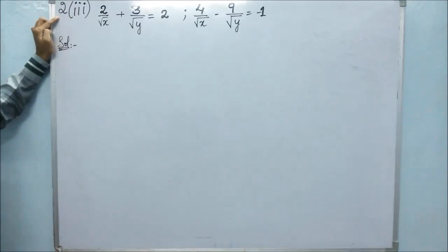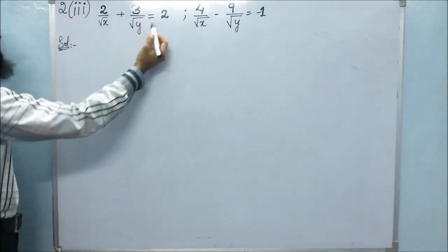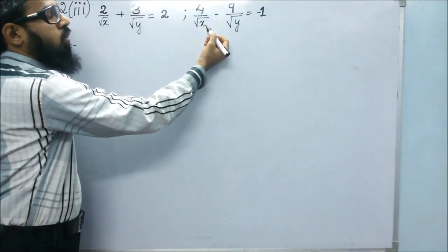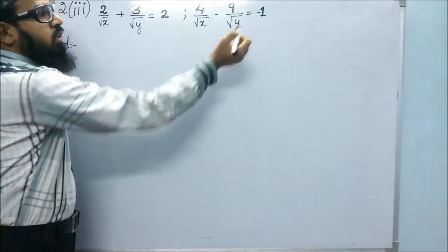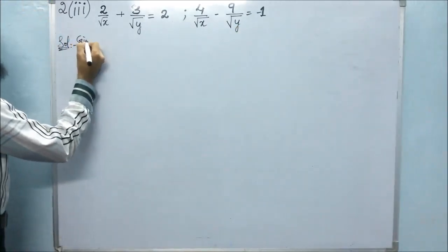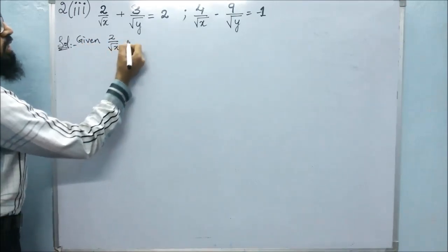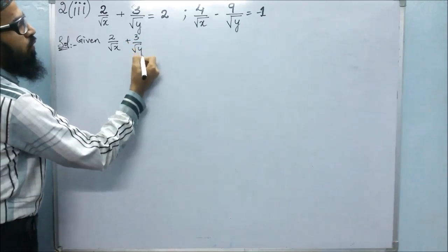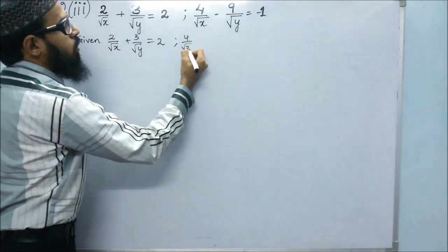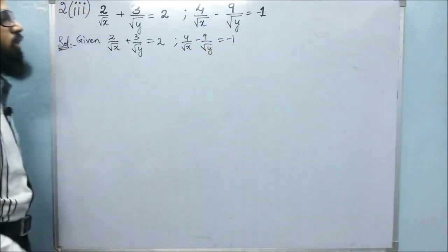In the third bit of the second problem, they have given that 2 by root x plus 3 by root y is equals to 2, and the other equation is 4 by root x minus 9 by root y is equals to minus 1.